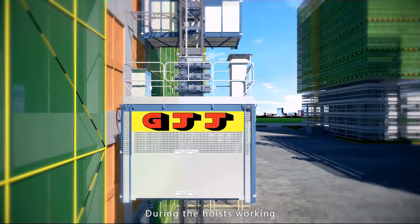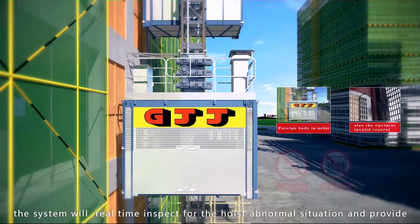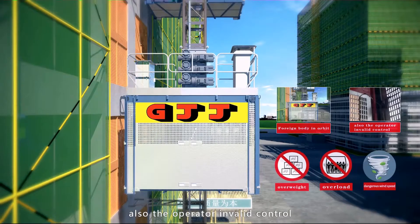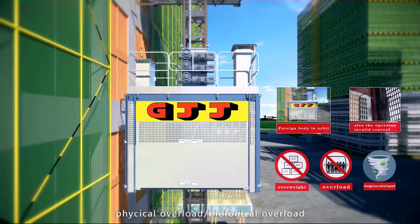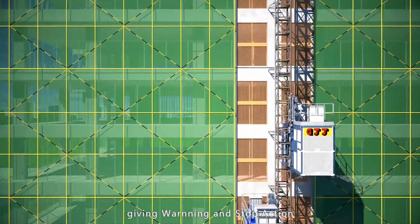During the hoist working, the system will real-time inspect for the hoist normal situation and provide hoist sway inspection. Also, the operator invalid control, physical overload, biological overload, dangerous wind speed, giving warning and stop action.